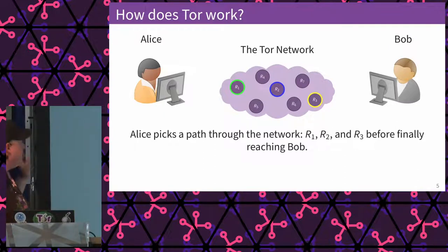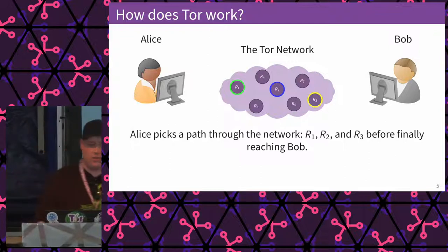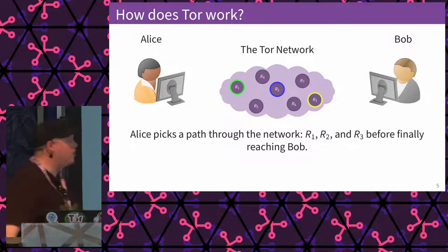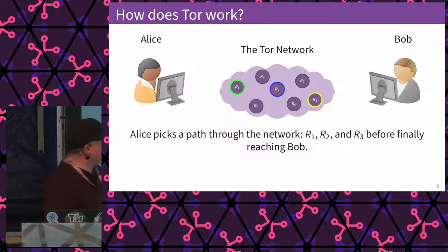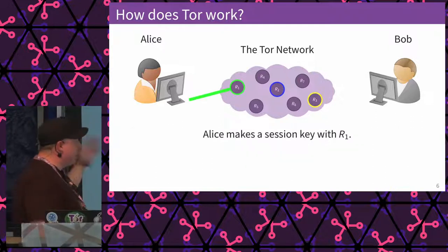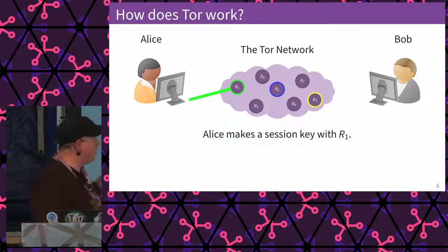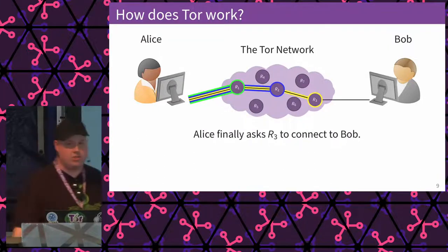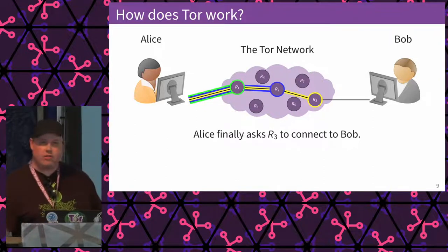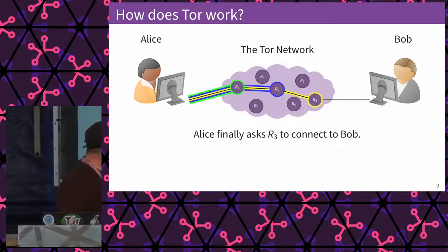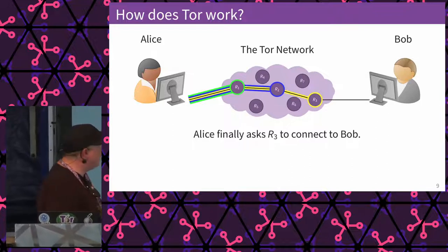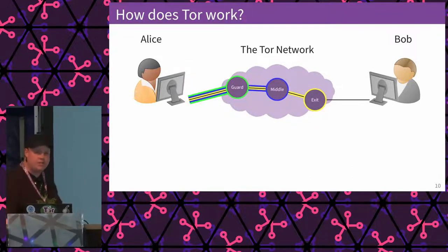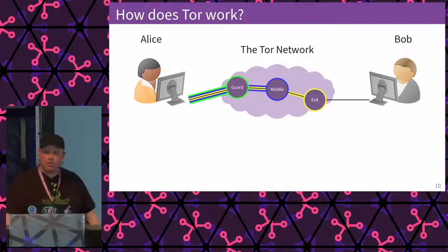Taking a quick primer to how Tor works: here we have Alice and Bob — Bob is usually a server you want to reach on the internet. We have the Tor network in the middle consisting of relays operated by different people. Alice knows the entire composition of the network and decides on three nodes to connect through before reaching Bob. She establishes a cryptographic session key with the first relay, expands it to the second, further expands it to the last, and then makes a TCP stream out to Bob to communicate over application-level protocols like HTTP or HTTPS. We call this a telescope-style connectivity.